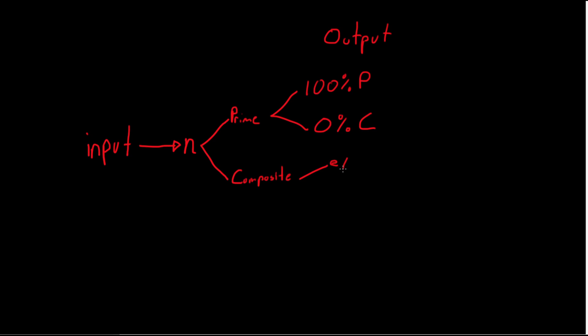However, if n is composite, then there will be some tiny chance of error e that it will label it prime, otherwise there is a 1 minus this tiny error probability that it will correctly identify it as composite.